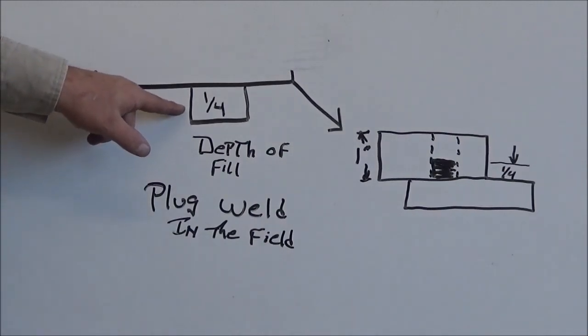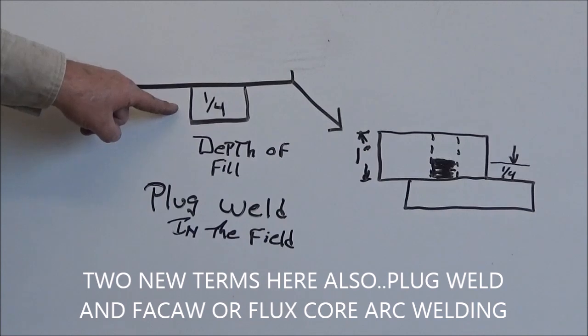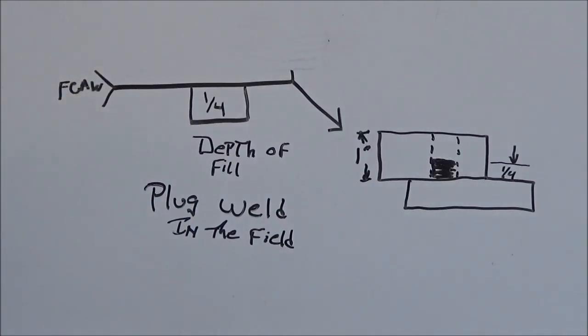This is the plug weld symbol. This is different than the fillet weld, so keep this in mind. Do you notice that this plug weld symbol looks just like a hole or a plug that you would put into the material? Just like the fillet weld symbol looks exactly like the fillet weld that you would put onto a piece of material.